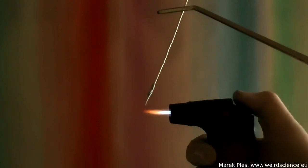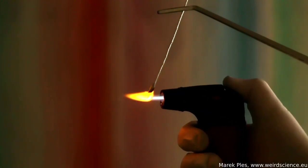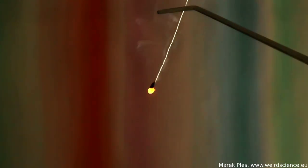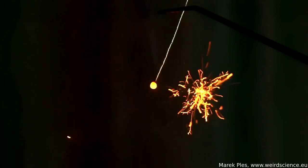To ignite the senko hanabi, we need to heat its bottom end with a lighter so that all the ingredients melt and form a hot droplet. Initially, we can observe that miniature flames shoot out in all directions from the hot droplet. After a brief moment, beautiful sparks come into view, accompanied by soft crackling sounds.